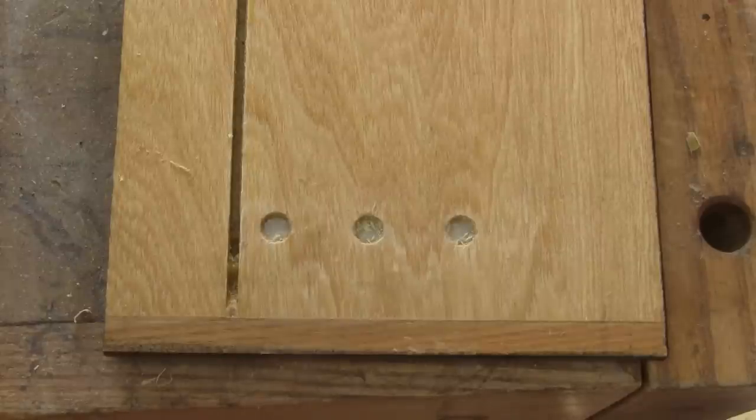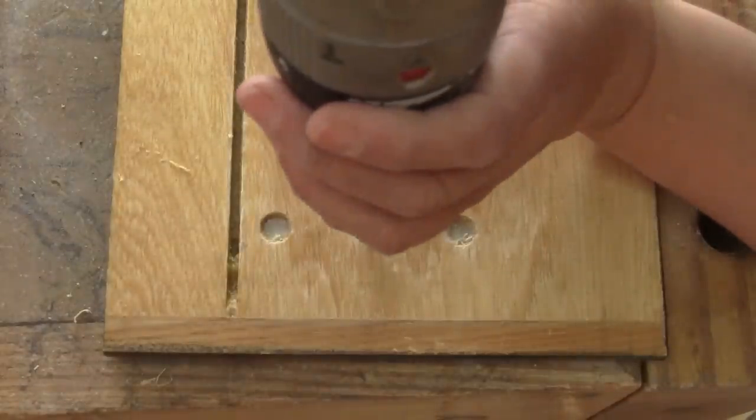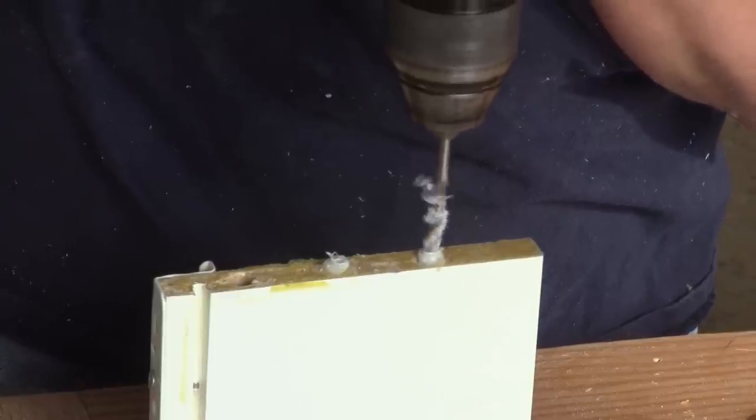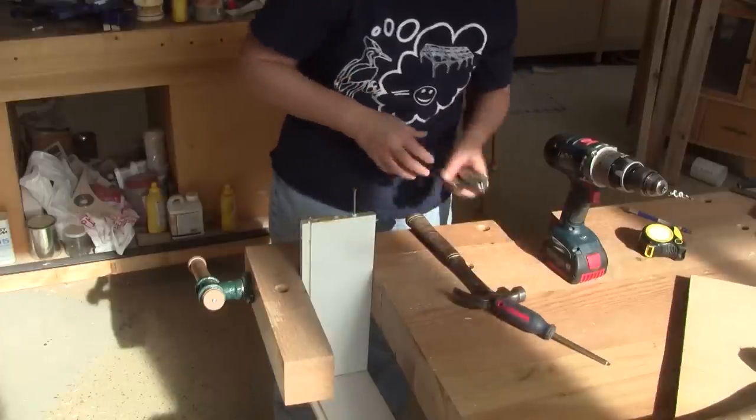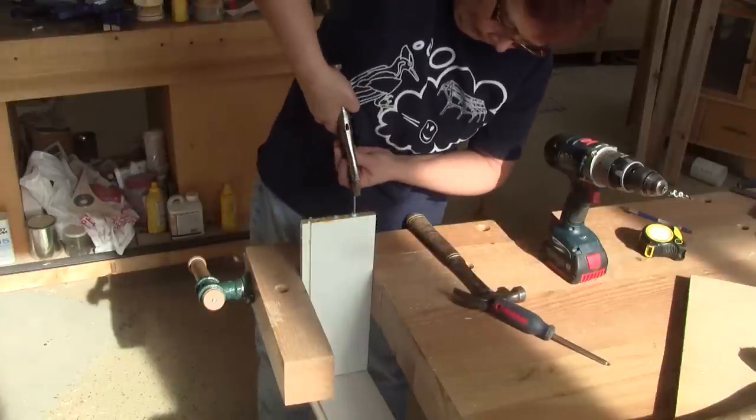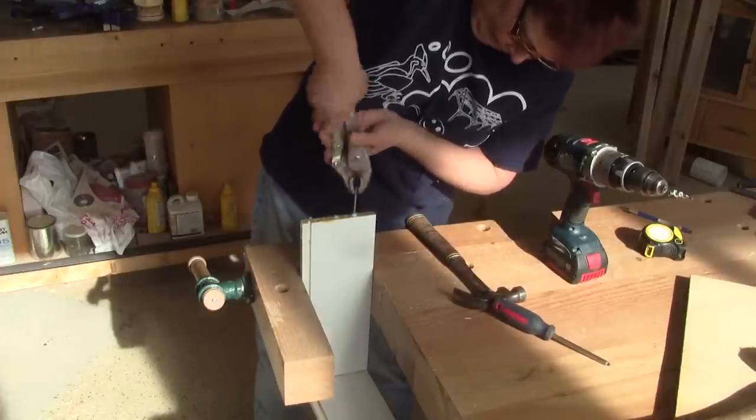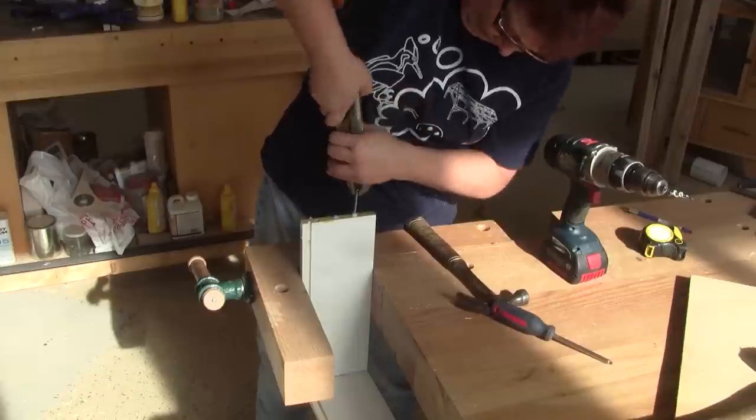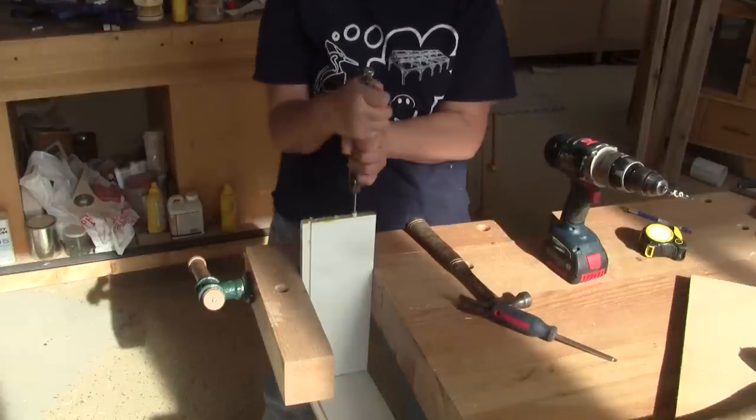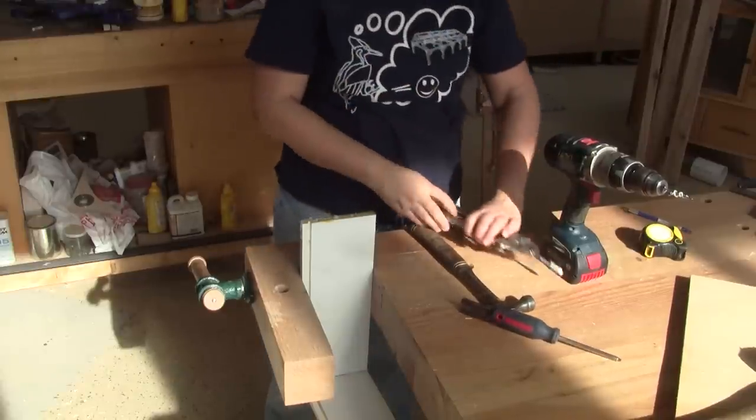I decide to use another technique. I drill a small hole into the dowel, screw a screw inside it, and use my herculean strength to pull it out with a vise grip. It's not easy, but it's more efficient.